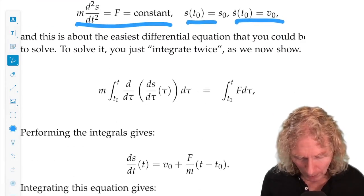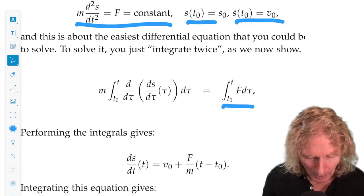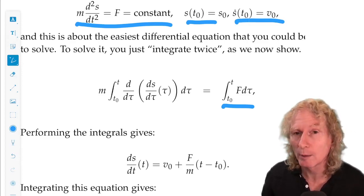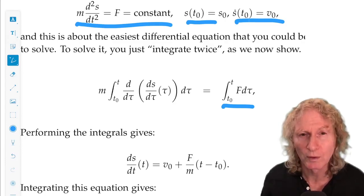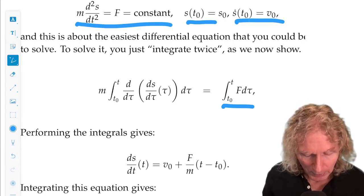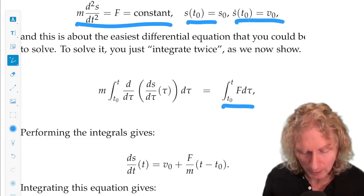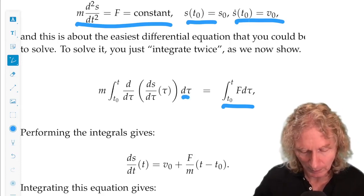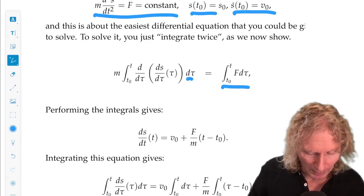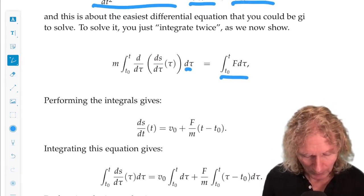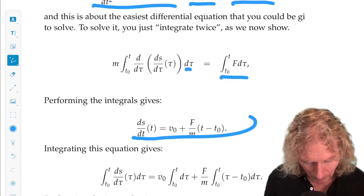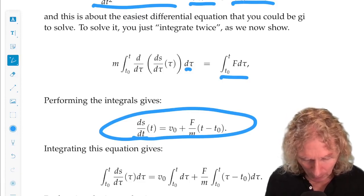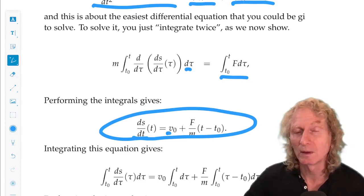We integrate once. F is a constant. That's an easy integral. So, the endpoints of integration are from the initial time t0 to an arbitrary time t. And I don't want to confuse the limit of integration with the dummy variable over which we are integrating. So, I change that variable to tau. It's probably something that you've seen done in your calculus classes. It takes a while to sink in. Once we've done that integral, it's very easy. We get this expression for the velocity as a function of time depending on the initial velocity and this linear in time function.